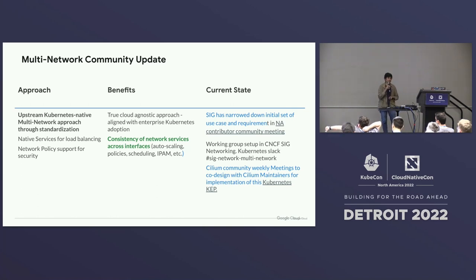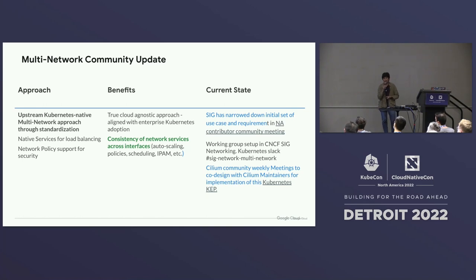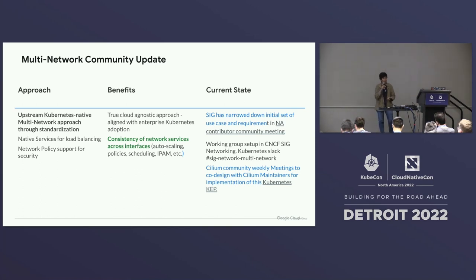For multi-network, the main reason we're driving this effort is to make networking Kubernetes-native — to give the complete power of network policy, native load balancing services, scheduling, and IPAM. At KubeCon itself there were meetings on this area at the contributor summit. The SIG has finalized and narrowed down the use cases and requirements for the first cut. The working group has been set up for SIG multi-networking in the CNCF SIG. We've also been having active conversations with the Cilium community to co-design how this can be built in Cilium.